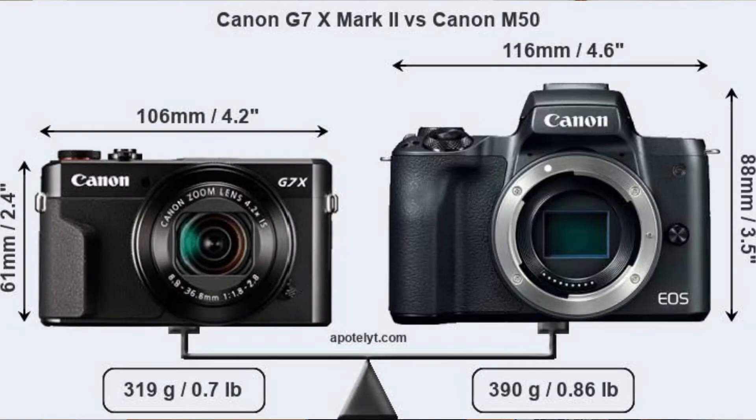If you have a flip screen, you can see the G7X Mark II's size. But if you have a good advantage, you can see the G7X Mark II's price is around 45-40. It's about 45. If you have a G7X Mark II, you can see the price is around 45-40.